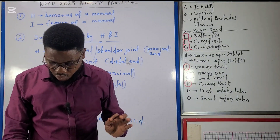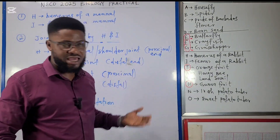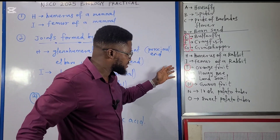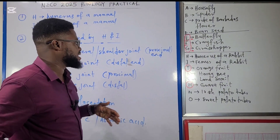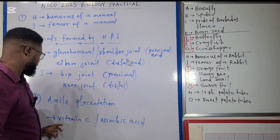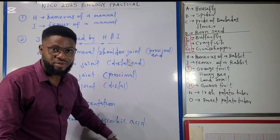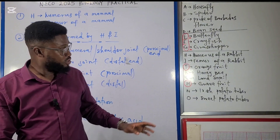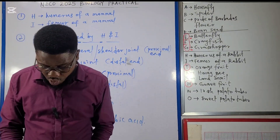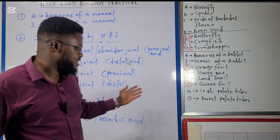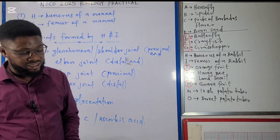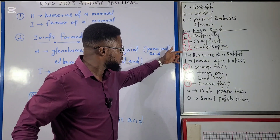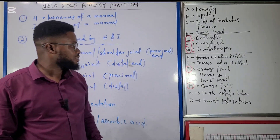If asked to name one food nutrient contained in specimens J and M, the answer is vitamins — more specifically, both specimen J (orange) and specimen M (guava) contain vitamin C or ascorbic acid, which helps prevent scurvy. Moving on, we've looked at H and I, J and M — now looking at specimens K and L.